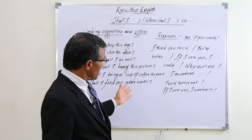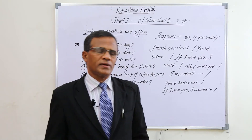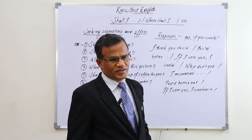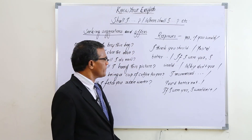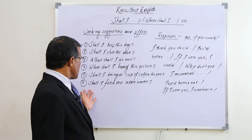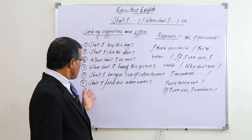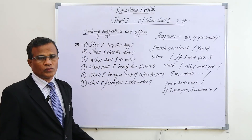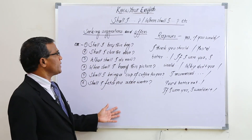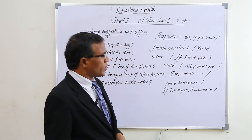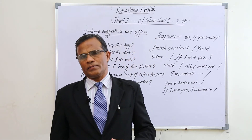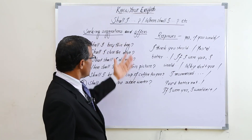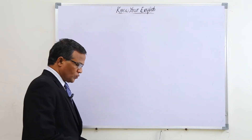For offers using 'shall I': 'Shall I bring a cup of coffee for you?' means 'Would you like some coffee?' The response may be 'Yes, thanks,' 'Yes, thank you,' or 'Thank you very much.' Another example: 'Shall I fetch you some water?' — response: 'Yes, please' or 'That's very kind of you.' We can use 'shall I,' 'where shall I,' 'what shall I,' 'how shall I' in such questions for seeking suggestions and offers.